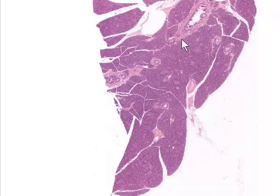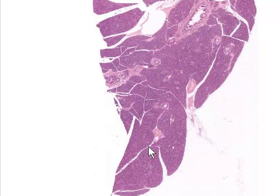Here's a section of pancreas. The first thing you may notice is that the section appears to be fractured or broken up into parts or lobules. There would be connective tissue in here, and this tends to separate during the course of tissue preparation. So the pancreas is in fact divided up into lobules.